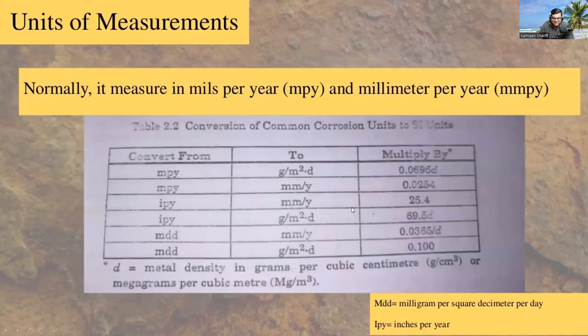As we can see here, there is a table which shows the conversion units and rates. The first column is from and to and it should be multiplied by what? The MPY which means mils per year is used to measure the corrosion rate in pipes and small tubes. The MMPY indicates millimeter per year.